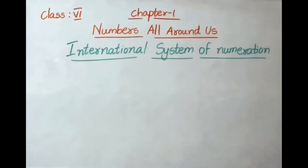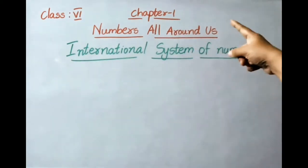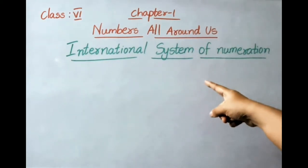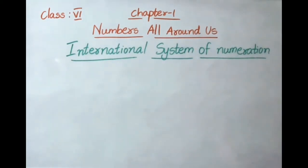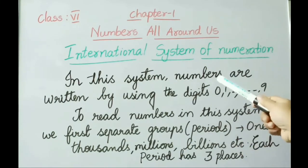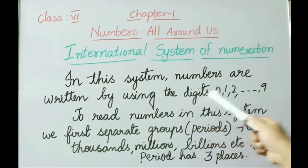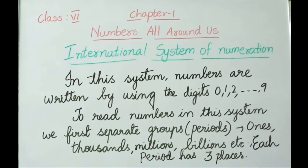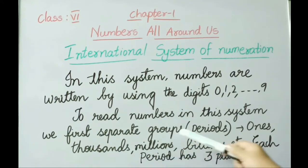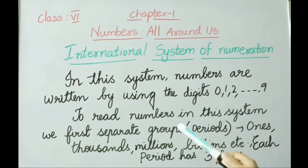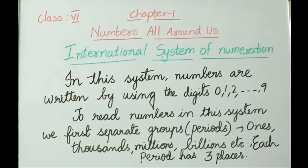Hello everyone, welcome to our channel. Today I'm going to explain Class 6 Chapter 1: Numbers All Around Us — the International System of Numeration. In the International System, numbers are written using digits 0 through 9. To read numbers in this system, we separate them into groups or periods: ones period, thousands period, millions, billions, trillions, etc. Each period has only three places.